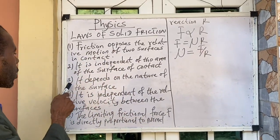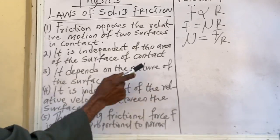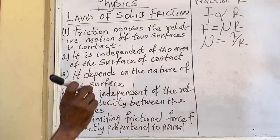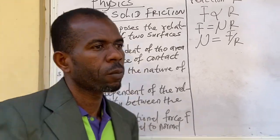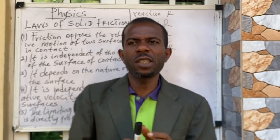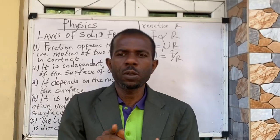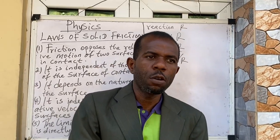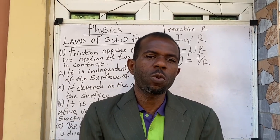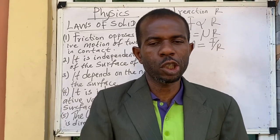Number three says it depends on the nature of the surface. Friction only depends on the nature of the surface of the body. For example, if we have a rough body, we are going to have a high level of friction.